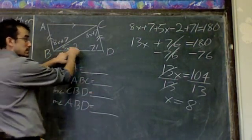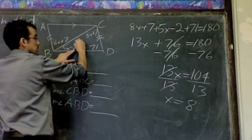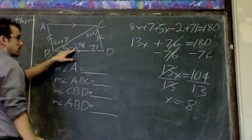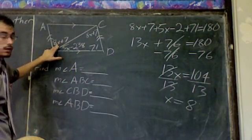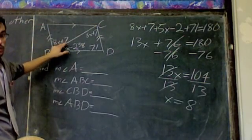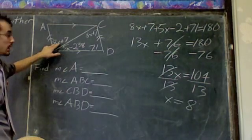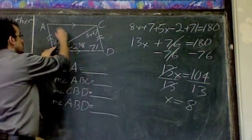40 minus 2. This angle right here, CBD or DBC, is 38 degrees. This angle here, ABC or CBA, is 8x plus 7. So this is 8 times 8, 64. 64 plus 7 is 71.